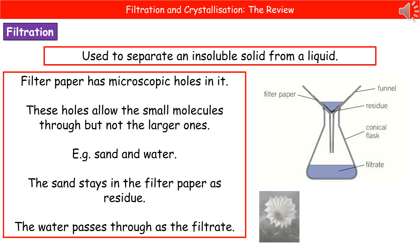All of the liquid is going to go straight through the filter paper and collect in the bottom of the conical flask — and that's the filtrate. The reason this works is that the filter paper has these tiny microscopic holes in it. Those holes are small enough to stop the solid particles going through, but large enough to allow the tiny liquid particles to pass through. That's why we can use this as a separating technique: the solid remains in the filter paper as the residue, whereas the liquid goes straight through and becomes the filtrate.